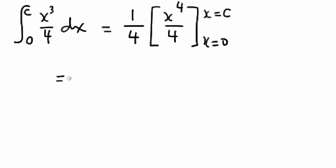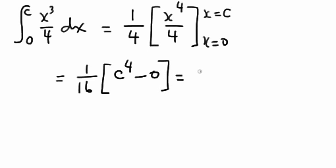That leaves us with one-sixteenth, and evaluating that at x equals c, you get c to the fourth, and evaluating at x equals 0, you get 0. So we're left with one-sixteenth times c to the fourth,